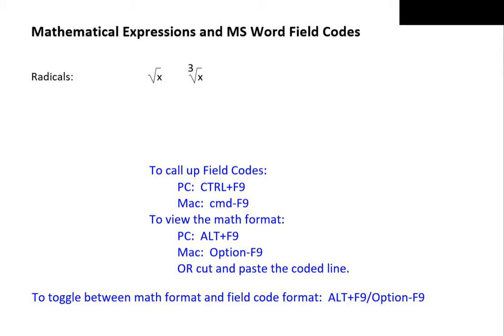For radicals, we call up the field code brackets: eq, space, backslash. For radical, we use r — of course. Open parenthesis. For the plain square root of x, just type x, then close the parenthesis. Cut and paste. And there you go — square root of x.